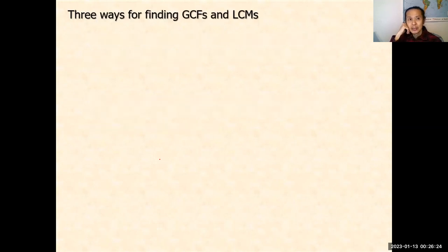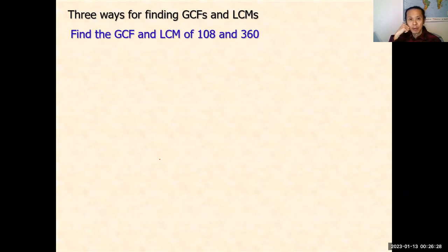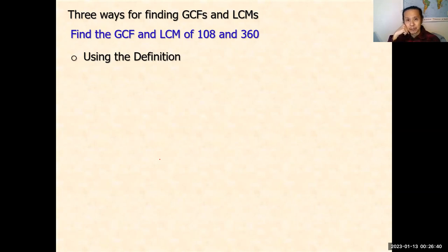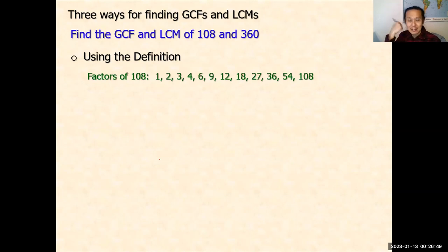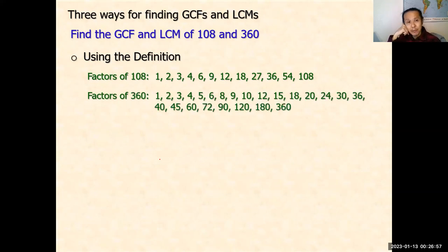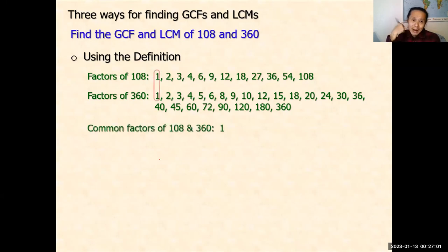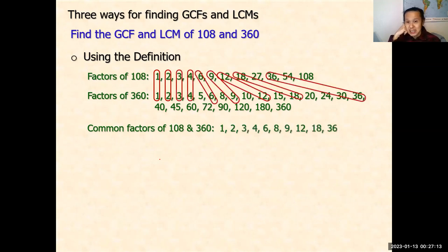Now let's look at how to find the GCF and LCM of 108 and 360. There are three ways of doing it. The first way is to use the definition. When we use the definition to find the GCF of 108 and 360, we first look for all the factors of 108, then all the factors of 360, and then look for the common factors: 1, 2, 3, 4, 6, 9, 12, 18, 36. Among all these, the greatest is 36. So 36 is the greatest common factor.